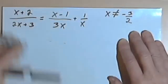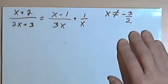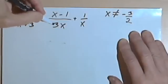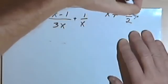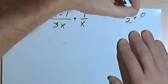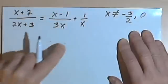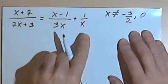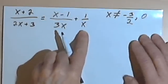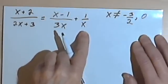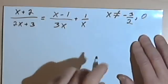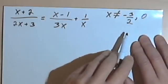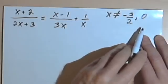Looking at the next fraction, it has a denominator of 3x. So obviously if x was 0, the denominator would equal 0, so x cannot equal 0. And looking at the third fraction, the denominator is also x, so again x cannot equal 0. My excluded values are negative 3 halves and 0.